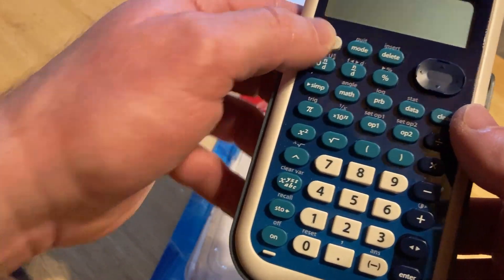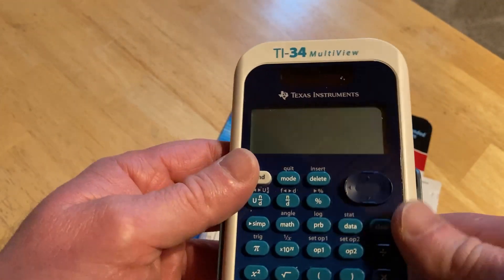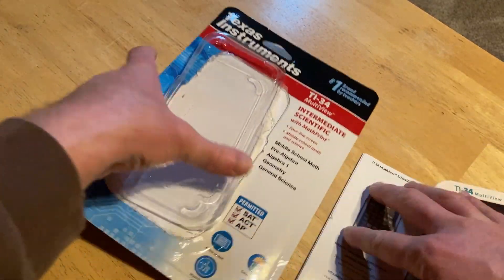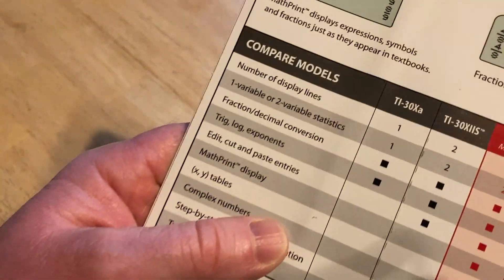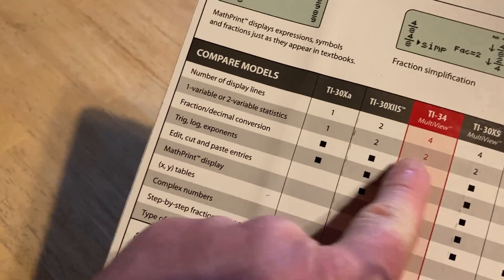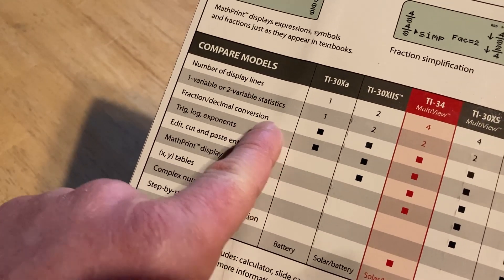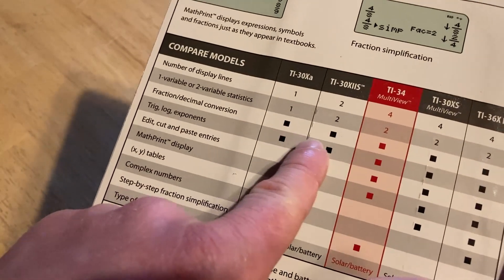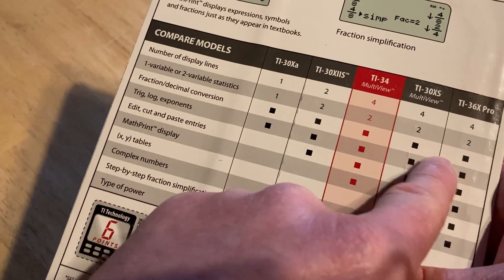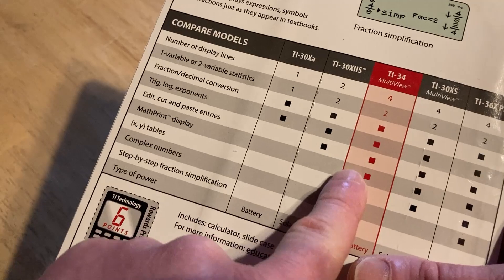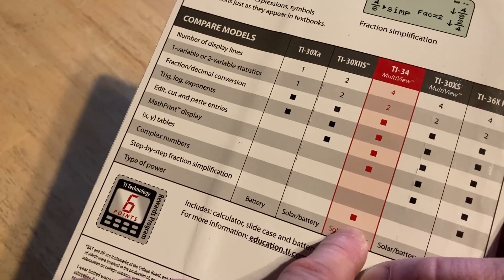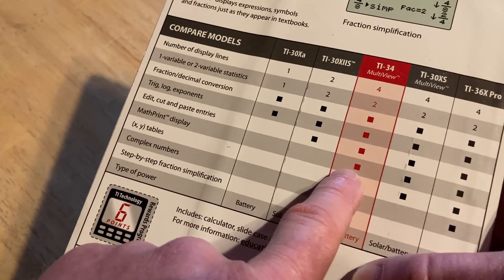So what exactly does that mean? Let me show you. You get this one, so you're going to get everything here. You're going to get trigs, logs, and exponents, fractions and decimal conversion—that's really important. Notice all the calculators get that. What makes this one special is you get step-by-step fraction simplification and Math Print display.